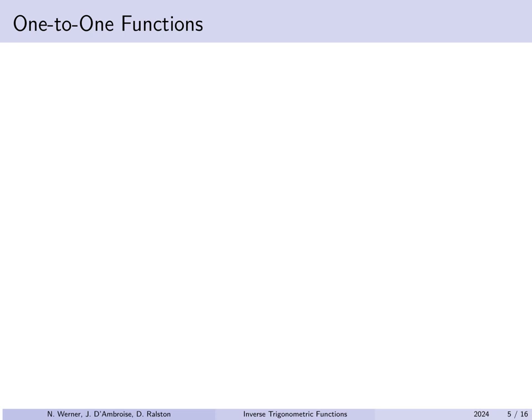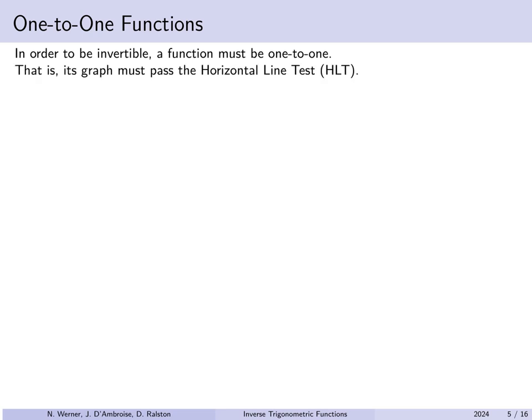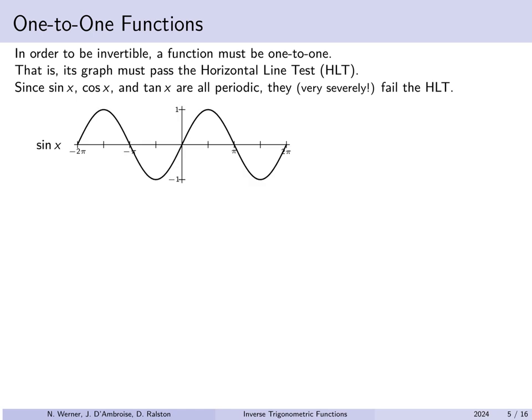Let's discuss one-to-one functions. In order for there to be an inverse function, a function has to be one-to-one — that is, its graph has to pass the horizontal line test, meaning any horizontal line can only intersect the graph at most one time. But sine, cosine, and tangent are all periodic, so they very much fail the horizontal line test. If you draw horizontal lines, it's possible to intersect those graphs infinitely many times.